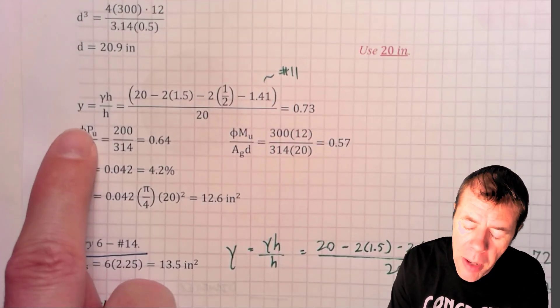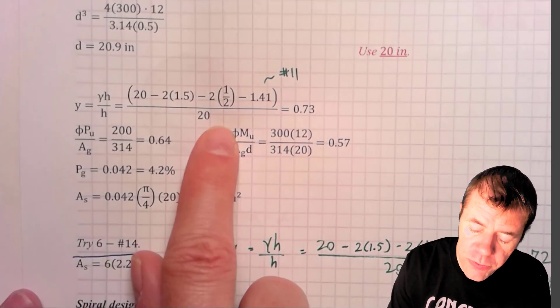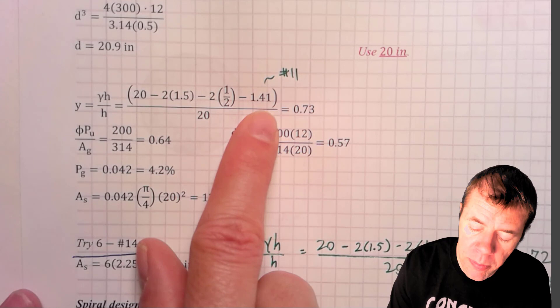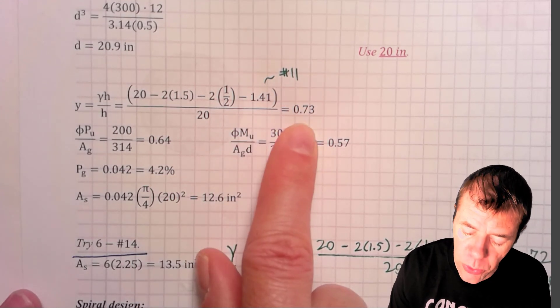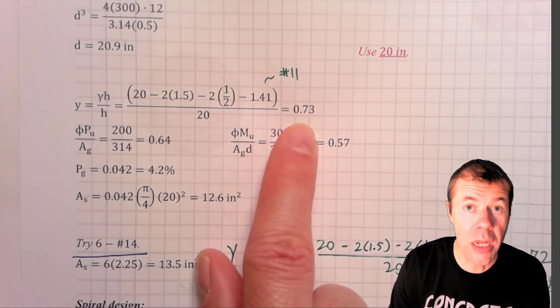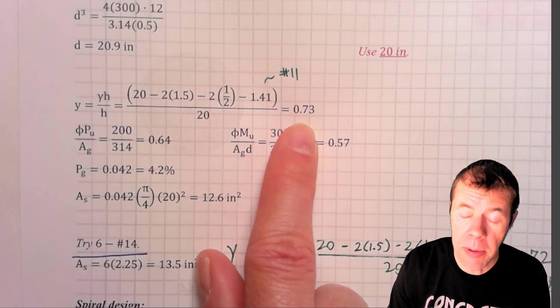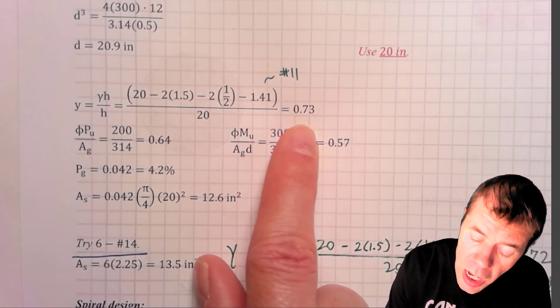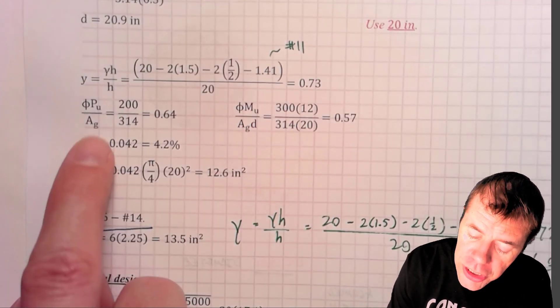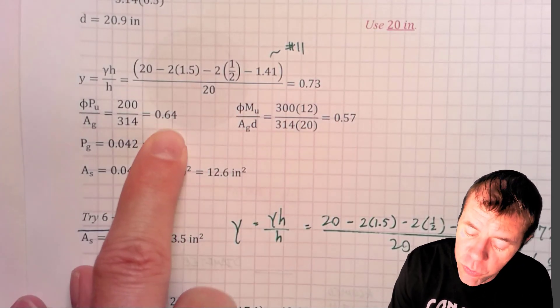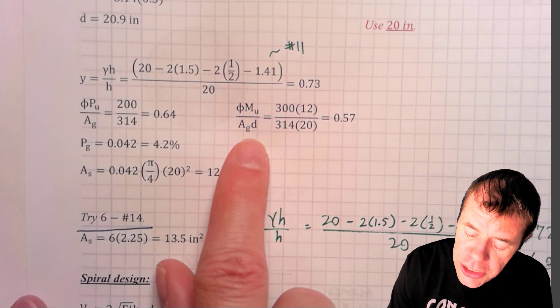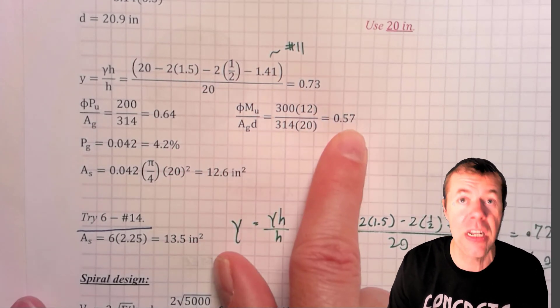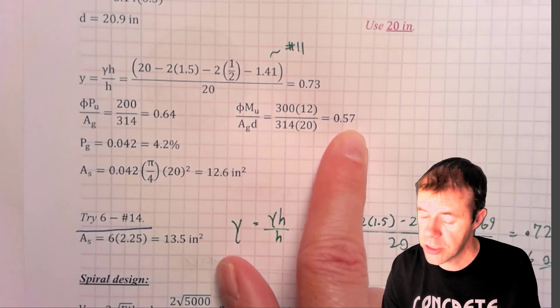When I plug in for my gamma, and this is just the way I solved it before. I'm going to use a number 11 bar. I get 0.73. And guess what? This is still conservative. My gamma before was 0.6. So, using 0.73 is going to be okay. I plug in for my PU over AG, and I get 0.64. I get my MU over AGD. I get 0.57. Let's go to that non-dimensional interaction diagram.